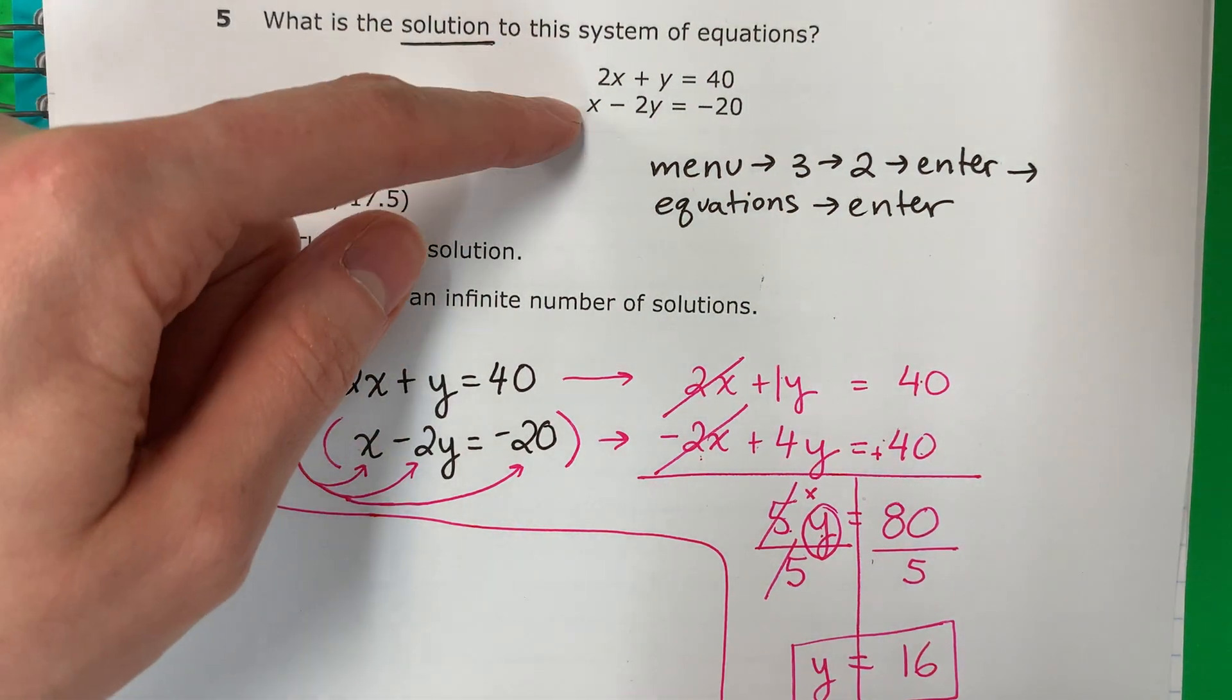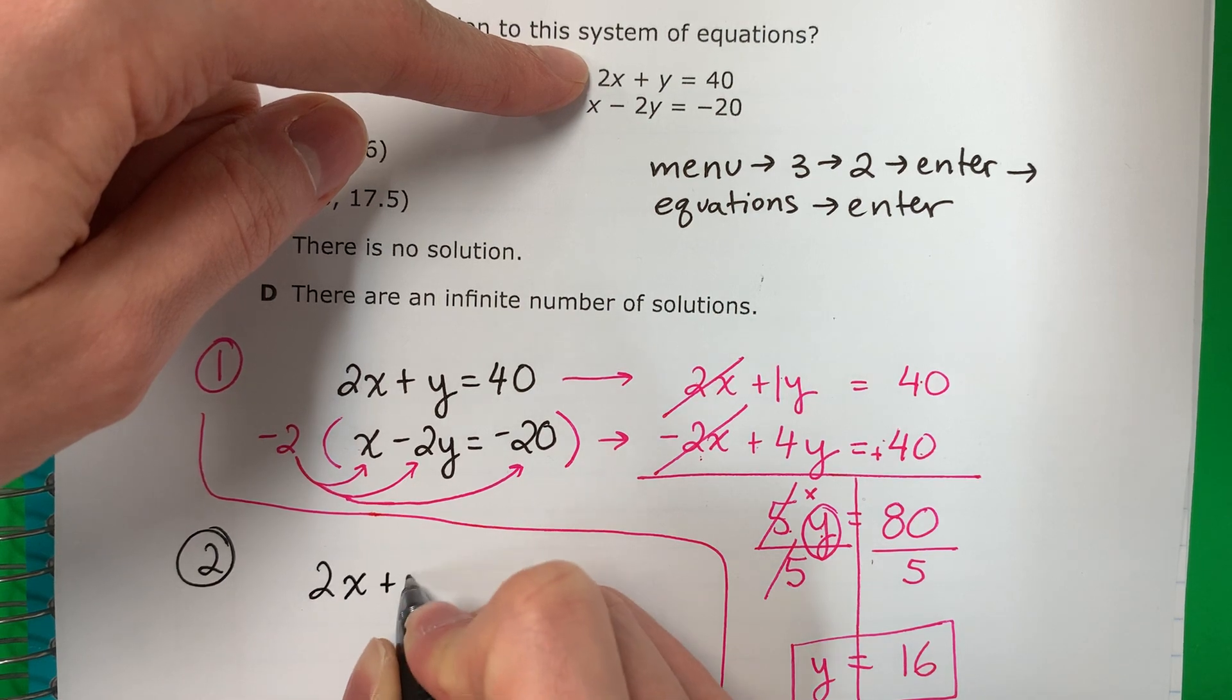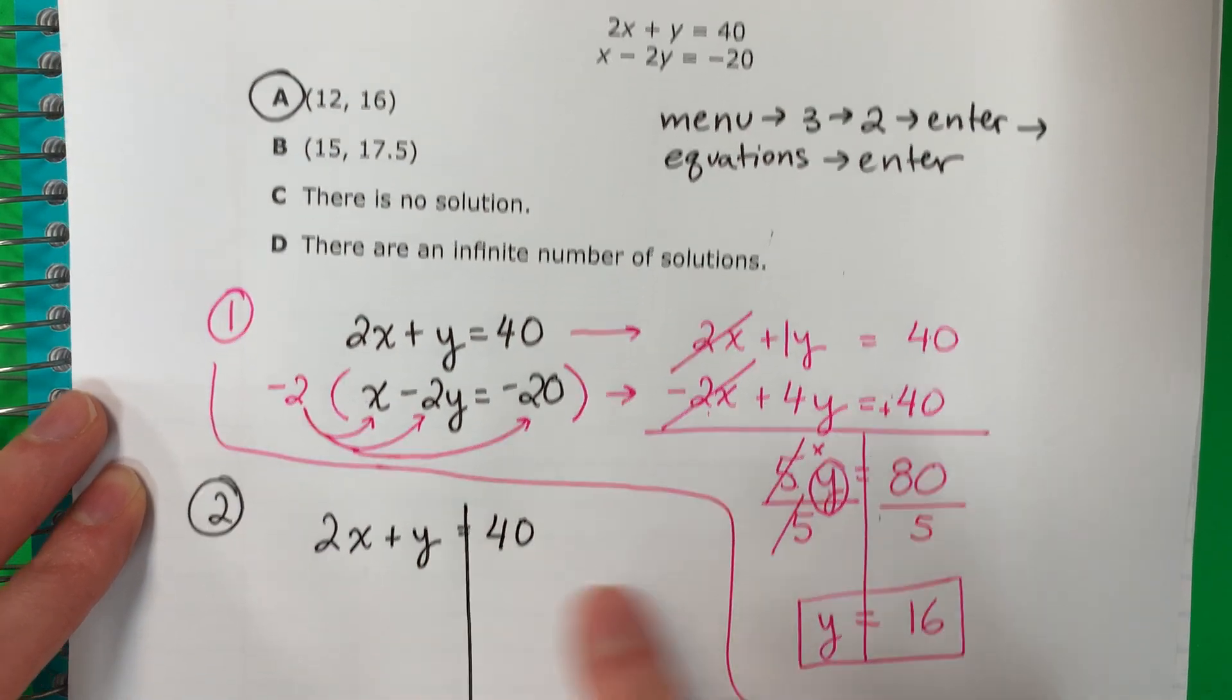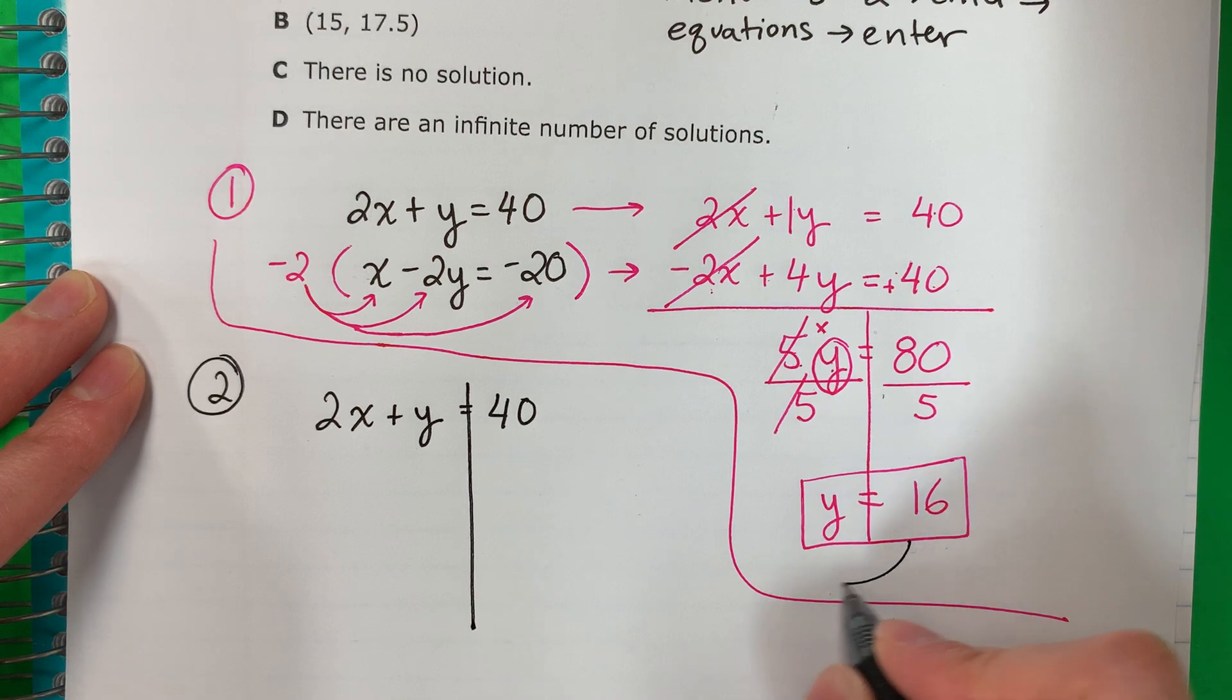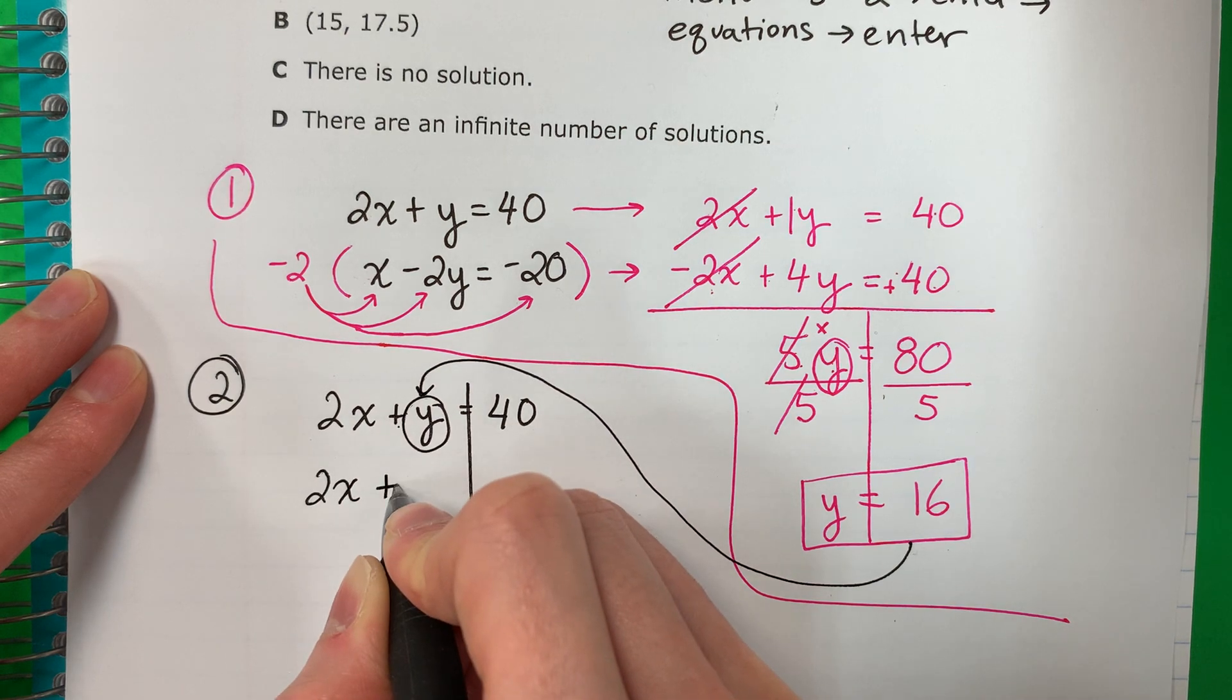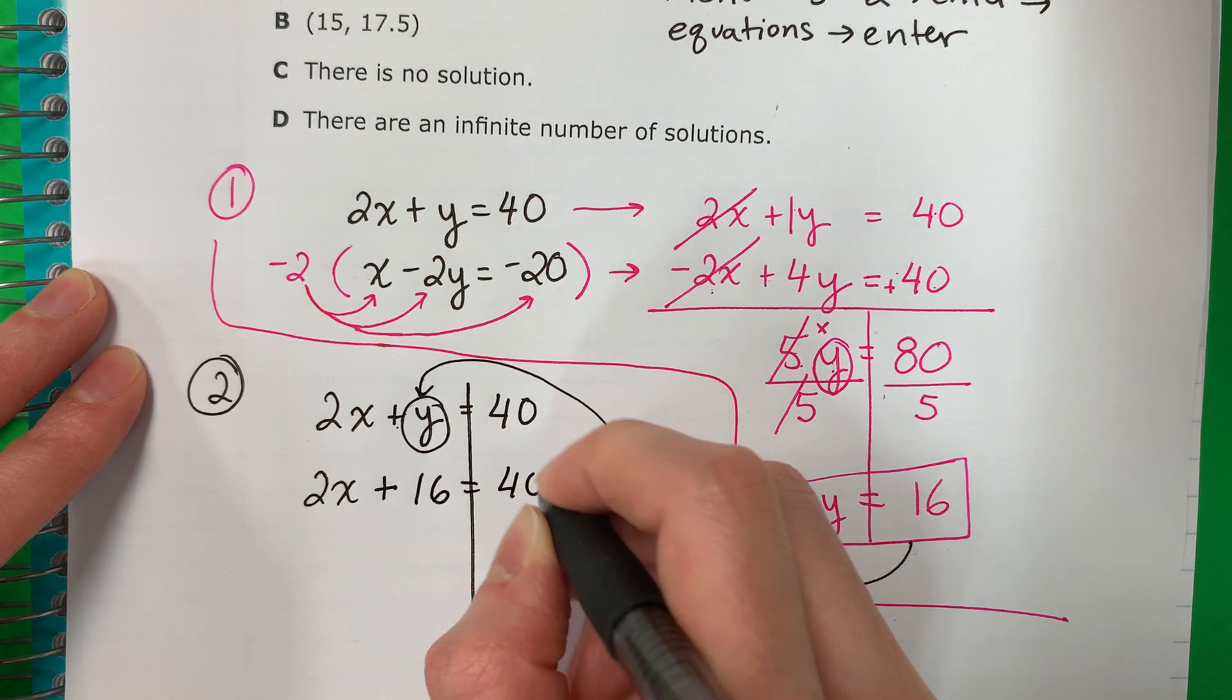Pick one equation. Una ecuación. I will go ahead and do the first one. Voy a usar la primera. It doesn't matter which one. No importa cuál. I'm going to put 16 for y. Voy a poner 16 por la y. I'm going to put this number here. So, copy 2x plus, what number for y? 16 equals 40.